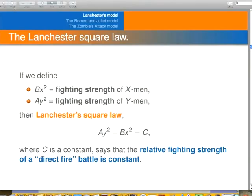And sometimes the term BX squared is called the fighting strength of the X-Men, and AY squared is called the fighting strength of the Y-Men. And so this says that the relative fighting strength is a constant. It's the Lanchester Square Law.